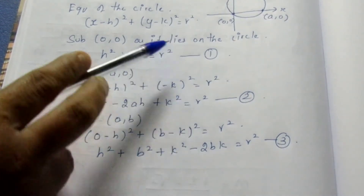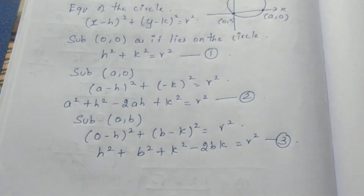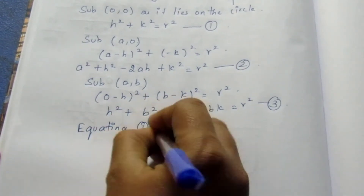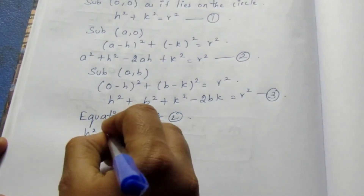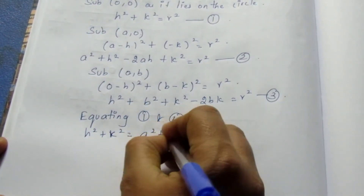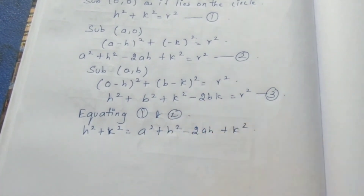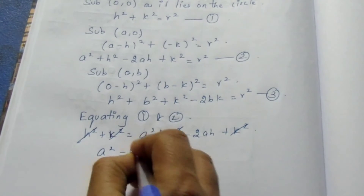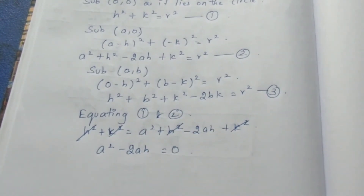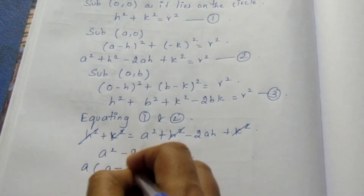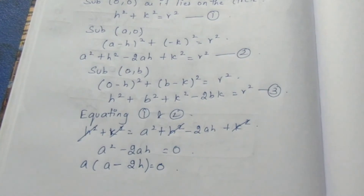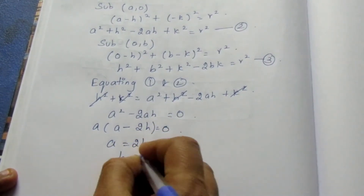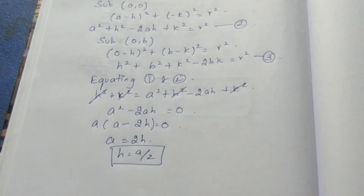I am going to equate equations 1 and 2, and equations 1 and 3. Equating 1 and 2, since both equal r²: h² + k² = a² + h² - 2ah + k². Now h² + k² cancel, giving a² - 2ah = 0. Taking a common: a(a - 2h) = 0. We don't want a = 0, we want h. So a = 2h, which gives h = a/2. We have found h = a/2.